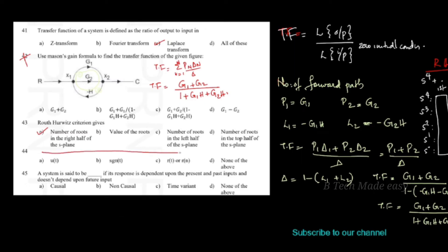Question 44: A system is said to be what if its response depends upon the present and past inputs and does not depend upon the future input? It depends on the present and past inputs but not on the future. The options are causal, non-causal, time-variant. A system that doesn't depend on future inputs is called a causal system. Option A is correct.